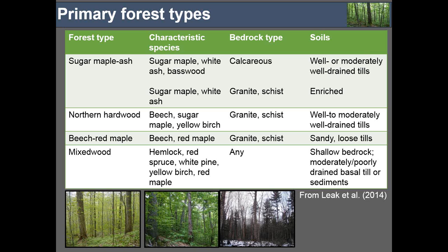Site matters tremendously, and we owe a lot to both Bill Leak and Ralph Nyland for characterizing both the range of sites that northern hardwoods exist across and the range of outcomes we might expect. Using Leak's framework, depending on the richness and parent material of the site, we have a range of northern hardwood types. The first is the rich northern hardwood forest — a sugar maple-ash type — existing where there is enriched calcareous bedrock, or enriched landscape positions like benches, coves, or colluvium-rich areas.